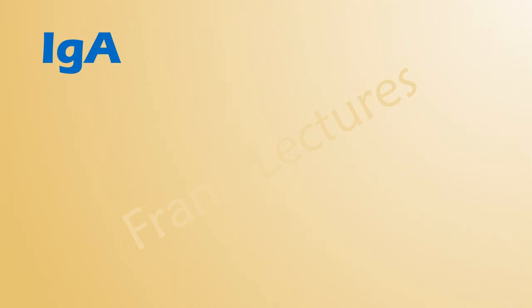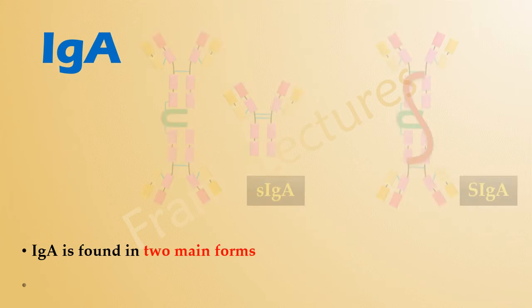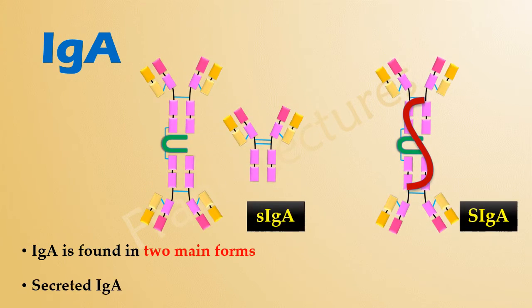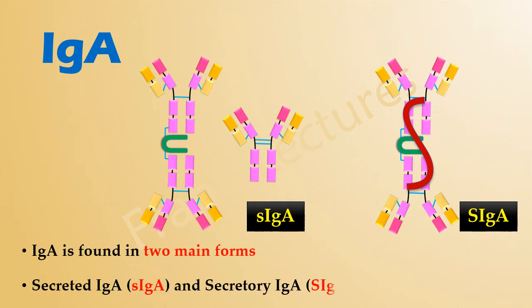Each subclass of IgA can exist in two main forms in the body: secreted IgA and secretory IgA. Let's understand these two forms.